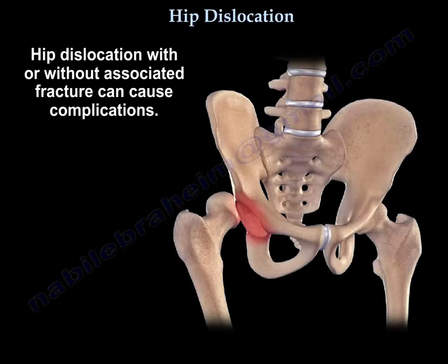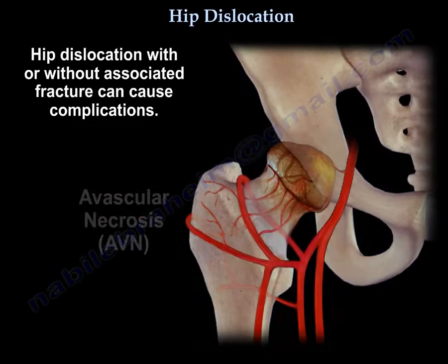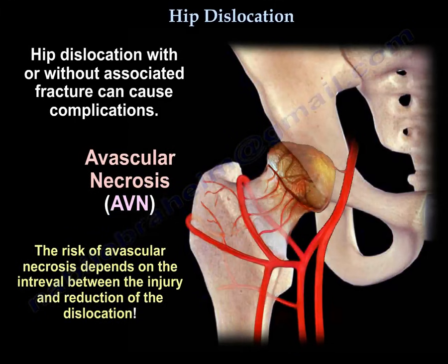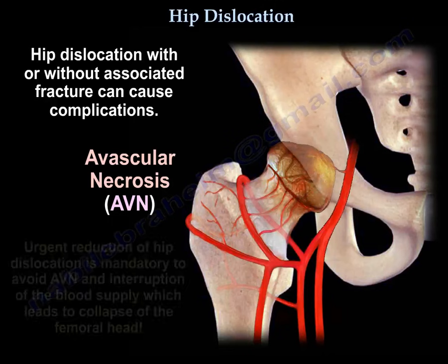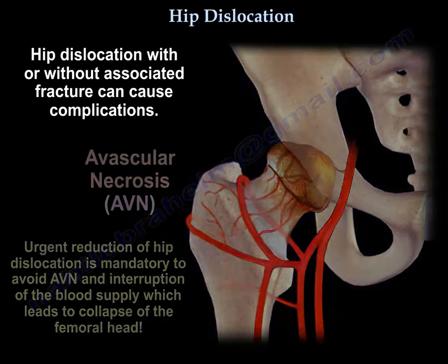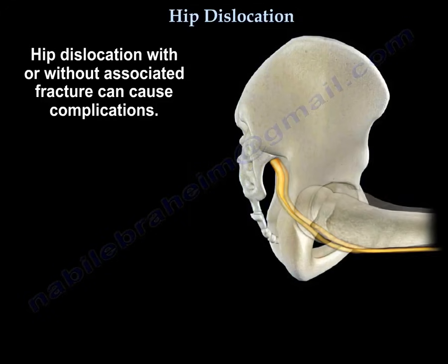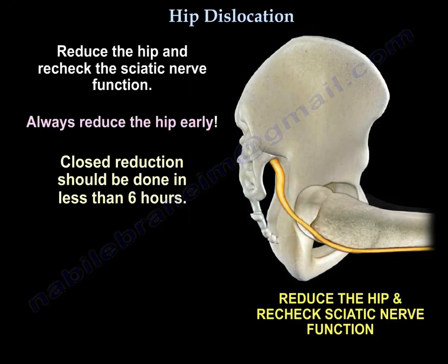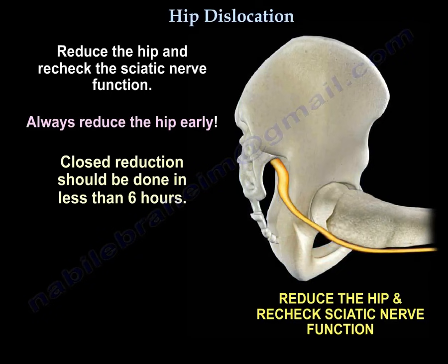Hip dislocation, with or without associated fracture, can cause complications such as avascular necrosis. The risk of avascular necrosis depends on the interval between the injury and reduction of the dislocation. Urgent reduction is mandatory to avoid avascular necrosis and interruption of the blood supply, which leads to collapse of the femoral head. Always reduce the hip early — closed reduction should be done in less than 6 hours.